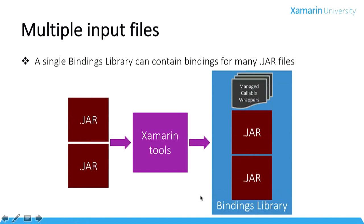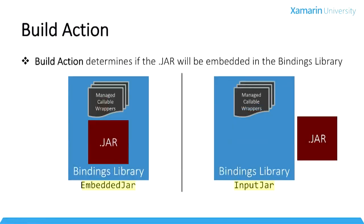You feed your original jar file into the tooling and it builds a DLL — a bindings library — that contains all those managed callable wrappers. You can have multiple jar files as input and they can all get wrapped up into a single bindings library. The jar file embedded inside the bindings library is by far the most common case. The jar file in Java bytecode format gets compiled into Dalvik bytecodes and then the resulting bytecodes get embedded in your APK.